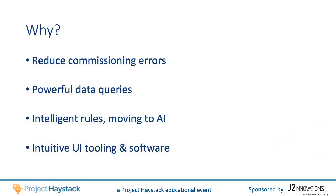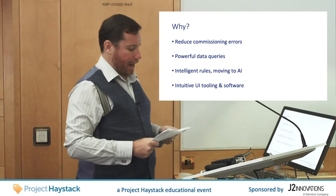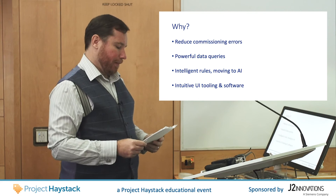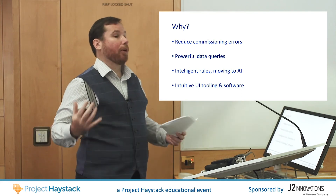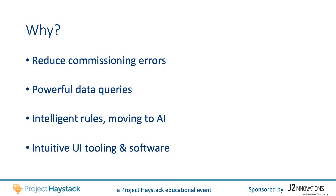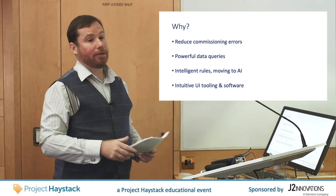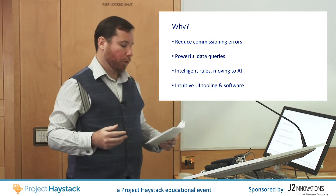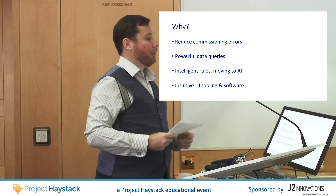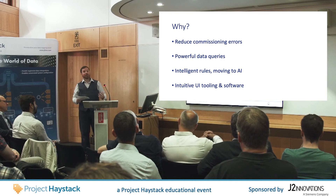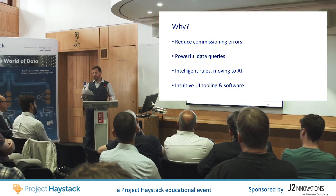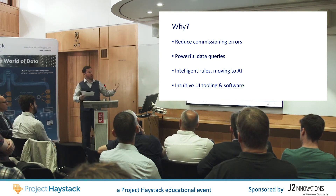I've talked about new formal tag definitions coming in Project Haystack 4, and how computers will understand more about the tags we already use today. But why bother with all of this? Well, going back to Dangerous Dave commissioning his building late one Friday evening, we can now more easily validate his work and check for silly mistakes. All this metadata around tags lets us perform powerful queries — I can search my building for all the equipment that heats air or conveys liquids. This gives rise to more intelligent rules for automation and analytics, which in turn could fuel future AI systems, and I can use these newly defined relationships to start developing more intuitive UI and software.